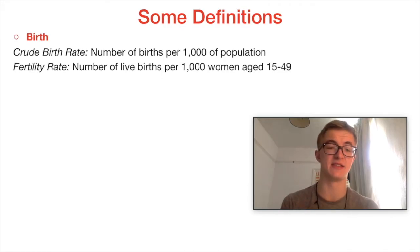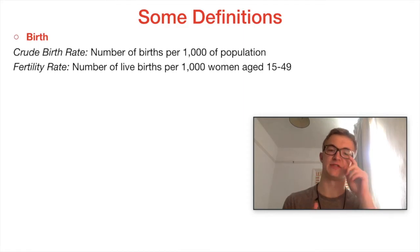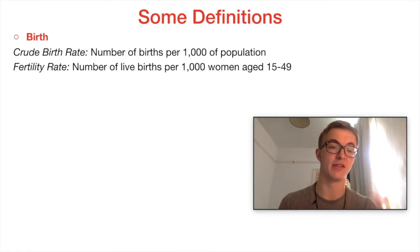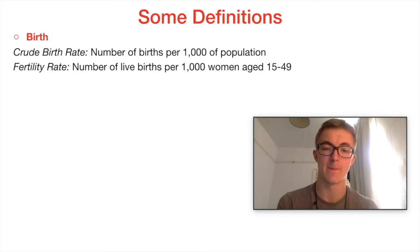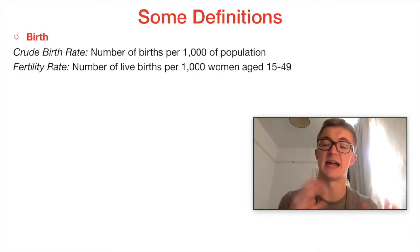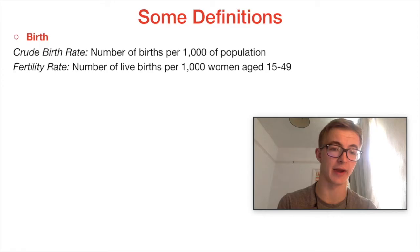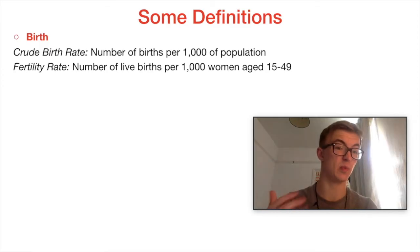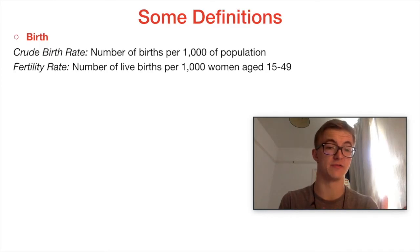Fertility rate is slightly different. It's per 1,000 women aged 15 to 49 — that is, the number of live births, children who survive birth, per 1,000 women aged 15 to 49. The reason we distinguish between the age of women is because 15 to 49 tends to be the childbearing age. For this definition, if you're between the ages of 15 to 49, it is possible for you to bear a child.